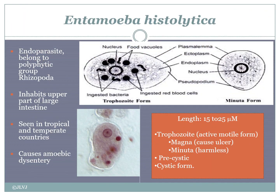Coming to Entamoeba histolytica — these parasites are endoparasites, meaning they can live inside the body of the human or similar vertebrate hosts. These organisms are grouped under Rhizopoda, which is a polyphyletic taxa, meaning it is not certain that it originated from a common ancestor — it has multiple origins. This parasite is named 'amoeba' because it has a pseudopodium-like structure, though it is localized mainly to one side.